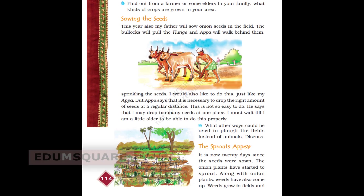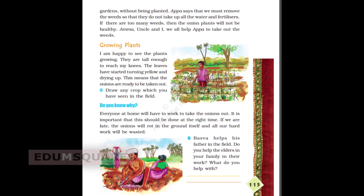Weeds grow in fields and gardens without being planted. Appa says that we must remove the weeds so that they do not take up all the water and fertilizers. If there are too many weeds, then the onion plants will not be healthy. Appa, Amma, Angal and I — we all help to take out the weeds.